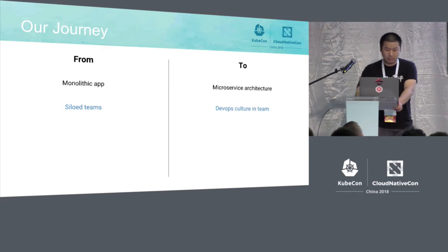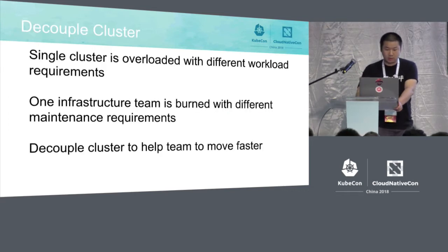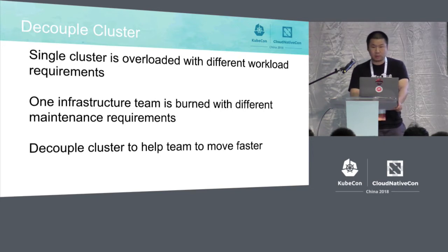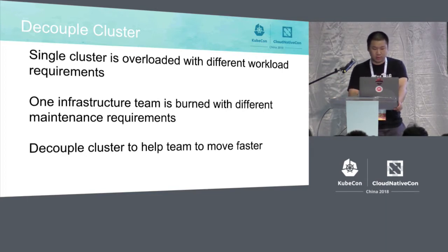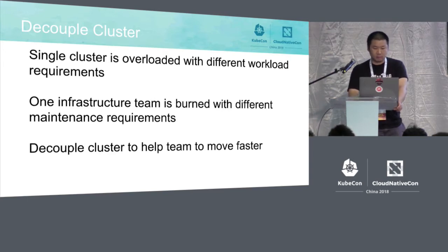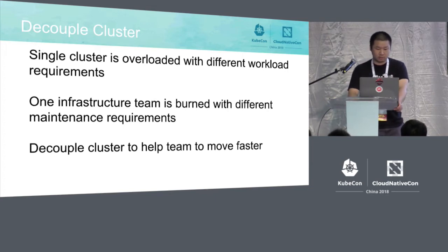Let's first touch on silo teams. We used to have a single cluster running on GKE on Google Cloud, a Kubernetes cluster with different workloads — machine learning, long-running daemon jobs, and short-time jobs all running on a single cluster. We decoupled that based on functionality and product engineering needs. We used to have one infrastructure team with so many different kinds of requirements; they got burned out and on-call, with 10 people on call in the middle of the night and nobody with a good solution for troubleshooting. Decoupled clusters let us move faster and more efficiently.